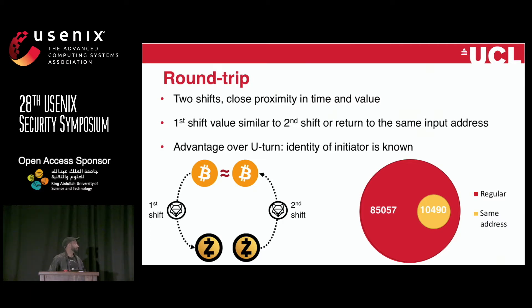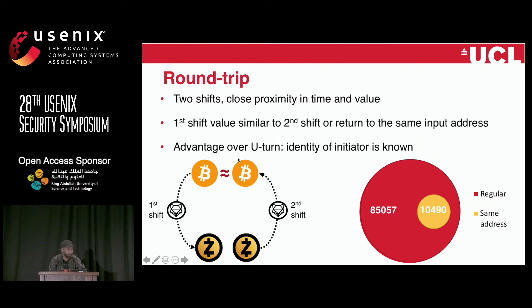Another case is the round trip: what if a user went through the circle but did something in between the two trades to obscure what they were up to? Similar to the U-turn — two shifts close in time and value — we look at whether the value of the first shift is similar to the second, or if they return to the exact same input address. For example, going from Bitcoin to Zcash, doing something unknown, and then returning to the original address. We found around 100,000 transactions matching this heuristic, and of those, 10,000 actually went full circle and used the same address.